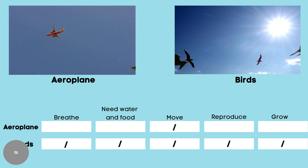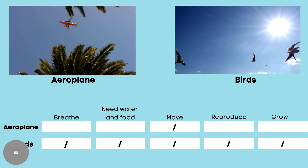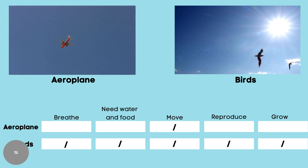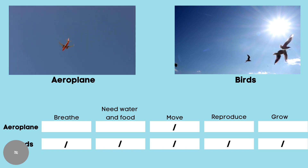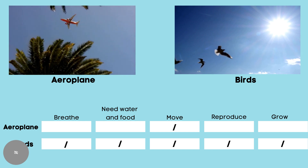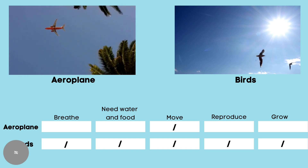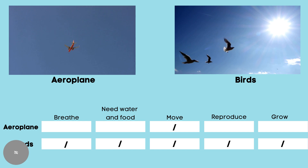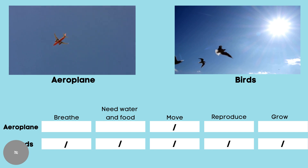Both the aeroplane and the birds can move. So, this is the similarity between the aeroplane and the birds. Now, let us look at the differences. The birds breathe, but the aeroplane doesn't. The birds need water and food, but the aeroplane doesn't. The birds reproduce, but the aeroplane doesn't. The birds grow, but the aeroplane doesn't.